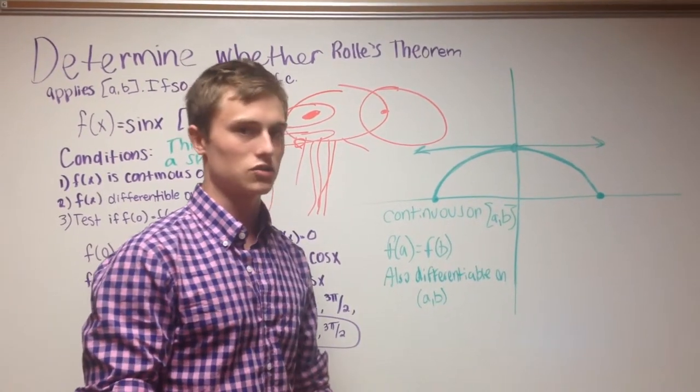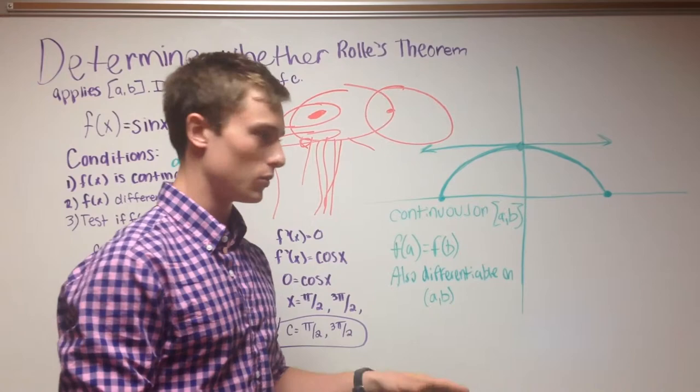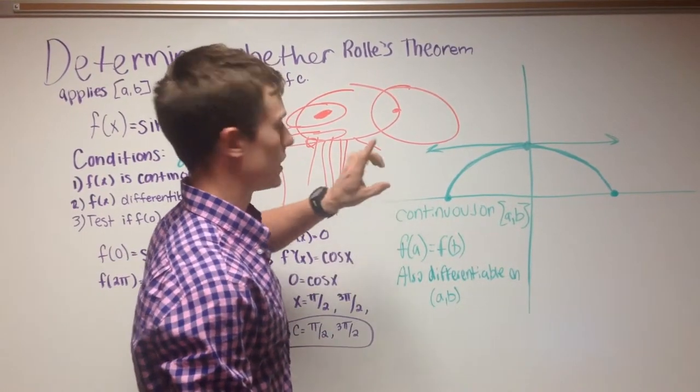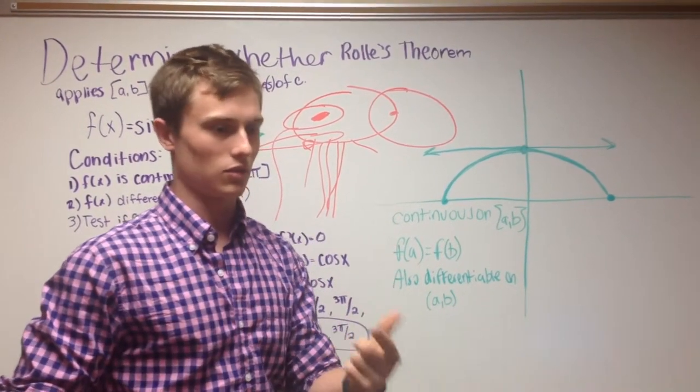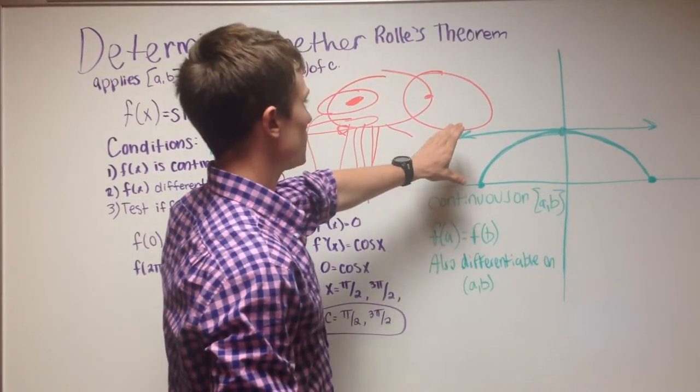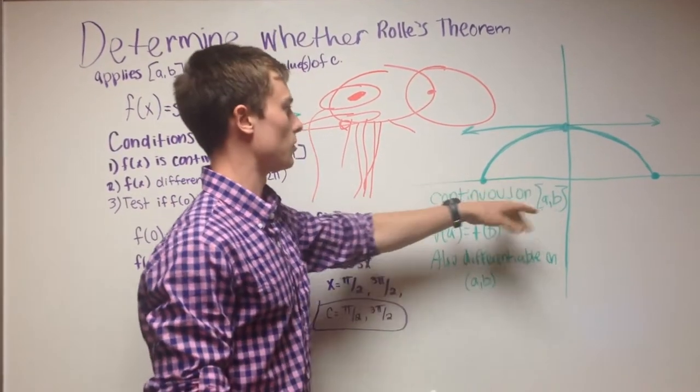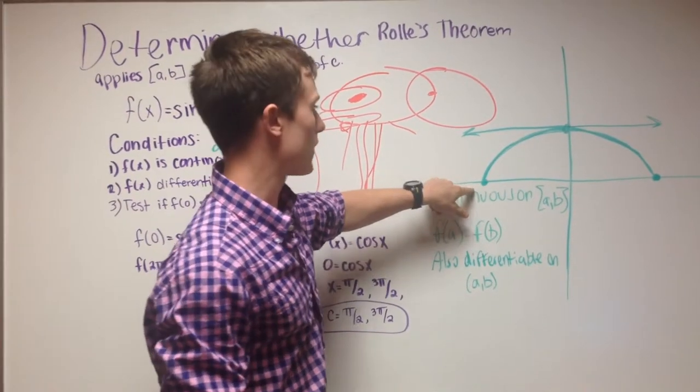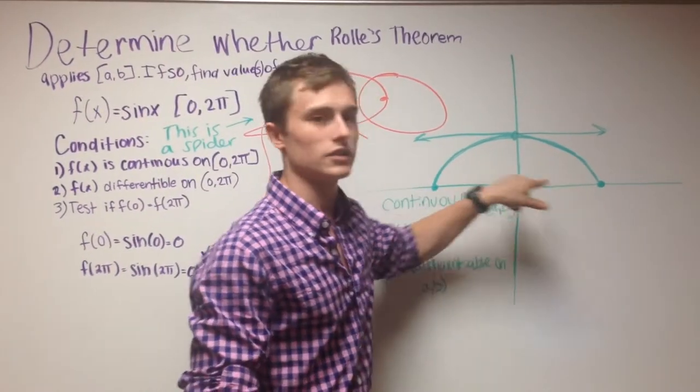So, anything less than a straight line, so a linear function, will not work, and that's only because the derivative of a linear function is zero. So we have this as an example. You see how we have f of a and f of b, and they're the same thing.